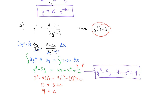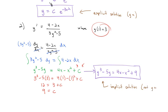Also, another vocabulary note: Example 1 — we call that solution an explicit solution, because we were able to solve it for y equals. Example 2 here, we're going to call this an implicit solution, because we were unable to solve for y equals. This one we can't really solve for y, so we leave it as is. It's not really a function, but it is a relationship between x and y.